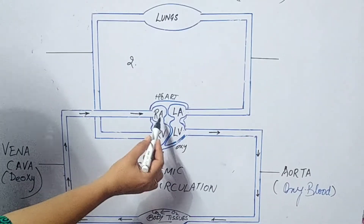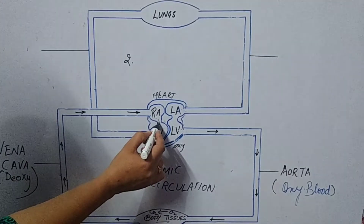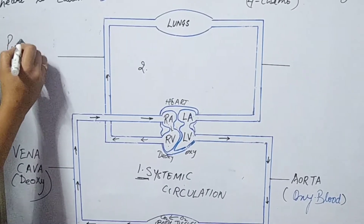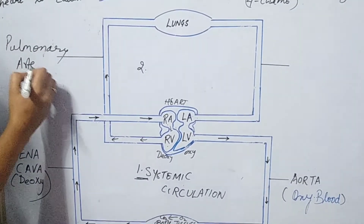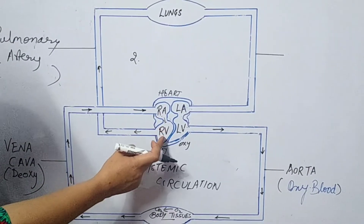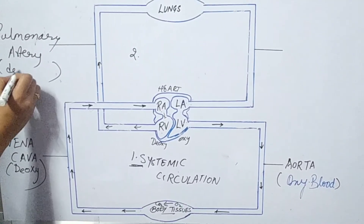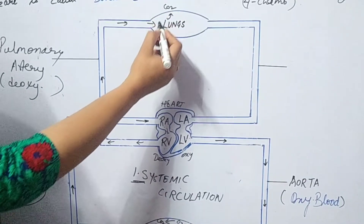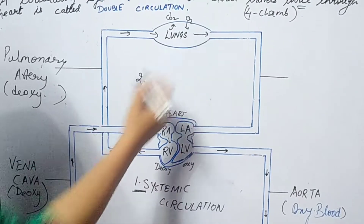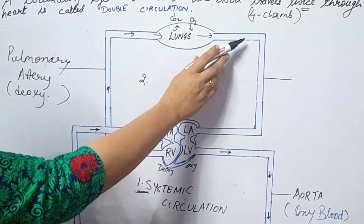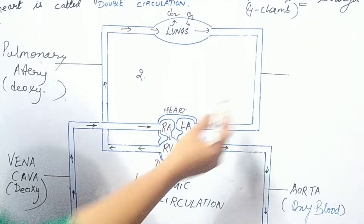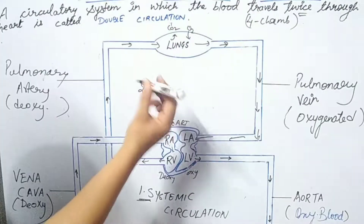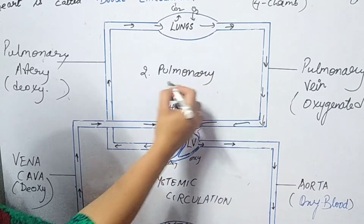In pulmonary circulation, from the right auricle, blood enters the right ventricle at the time of contraction, and then flows through the pulmonary artery — carrying deoxygenated blood — to the lungs for purification. In the lungs, carbon dioxide is exhaled and oxygen is inhaled, combining with hemoglobin. This oxygenated blood then enters the left auricle through the pulmonary vein. Because it is related to the lungs, this is called pulmonary circulation.